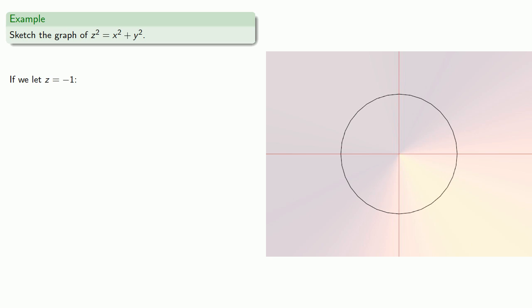If we let z equals negative 1, we get a circle centered at the origin with radius 1.